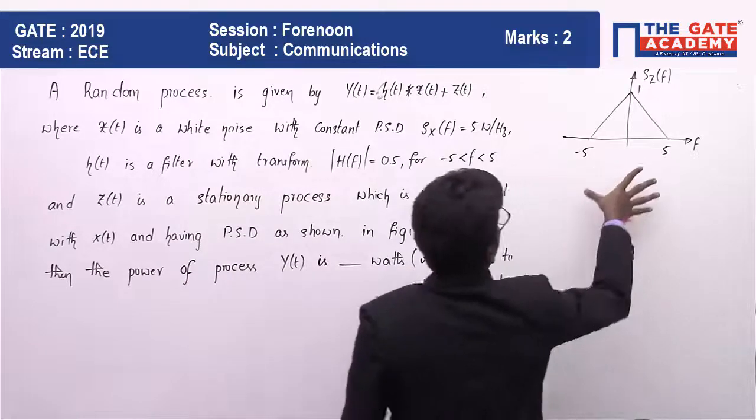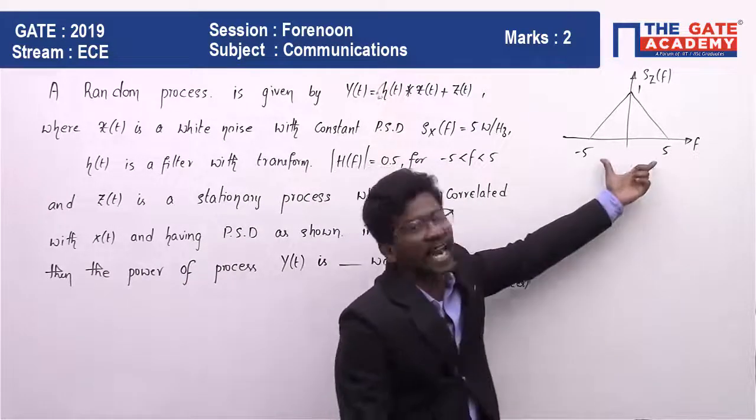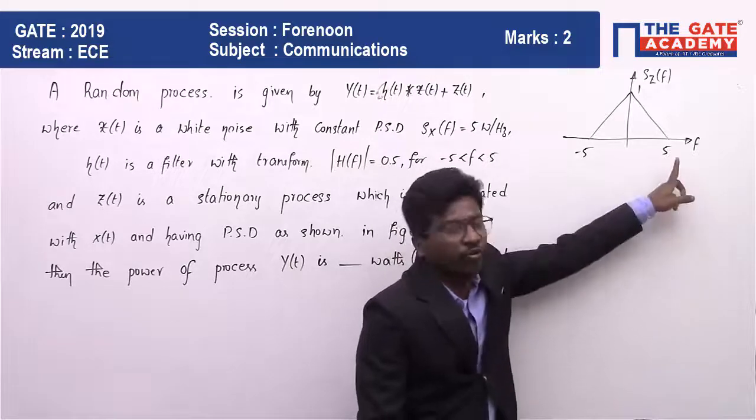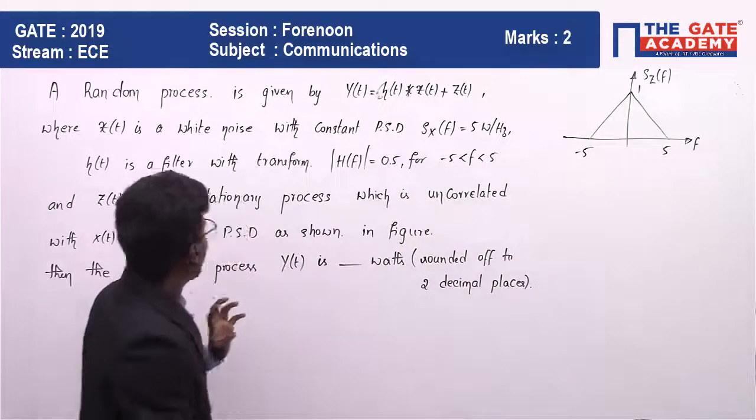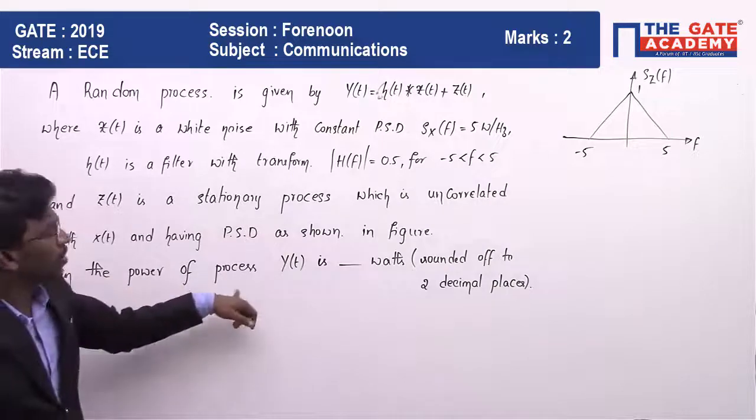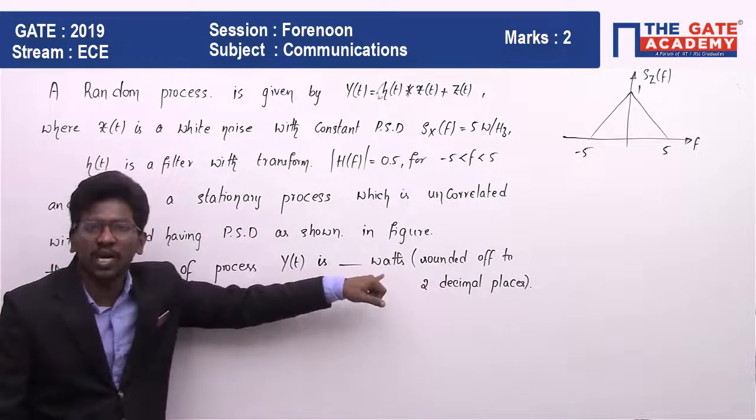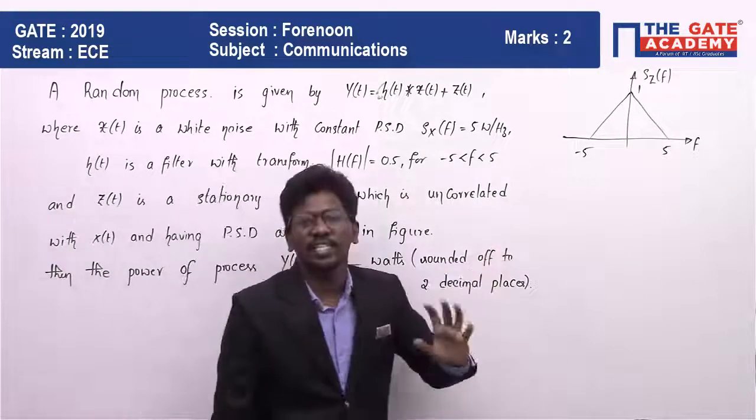z(t) is a stationary process which is uncorrelated with x(t) and having power spectral density as shown in the figure - a triangular PSD from -5 to 5 with amplitude of 1. Then the power of process y(t) is how many watts, rounded off to two decimal places?